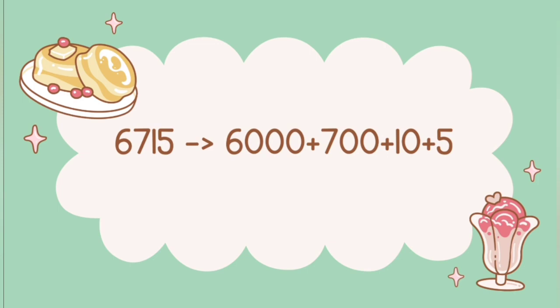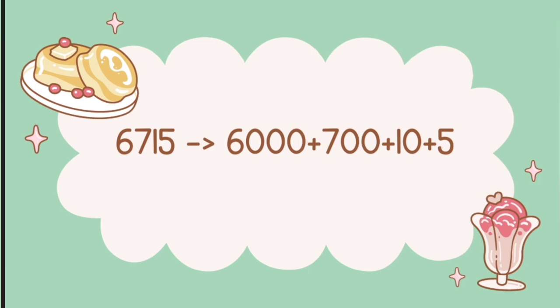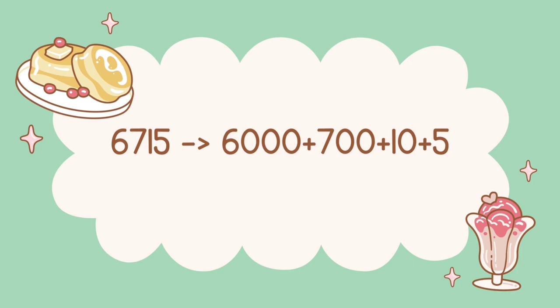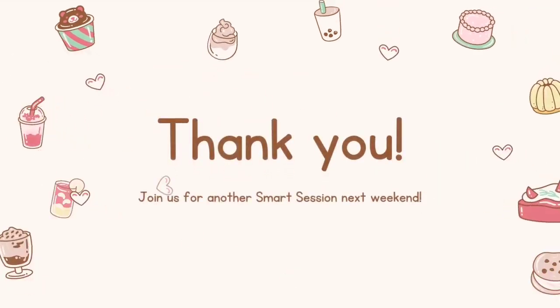So do you see how our base 10 number system works? Number places are used to count different sized groups, each group 10 times bigger than the next, and the digit in the number place tells us how many of each group we have. The tricky part is that the number places are invisible, so you have to know how they work behind the scenes in order to make sense of multiple-digit numbers.